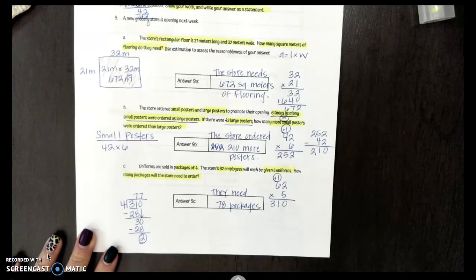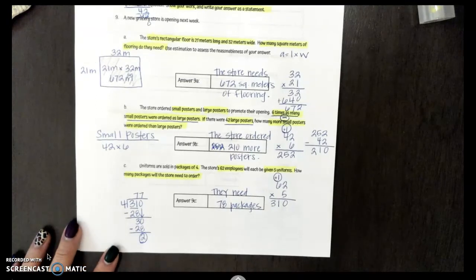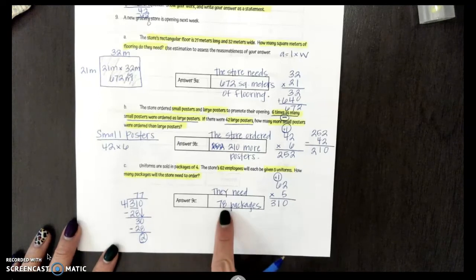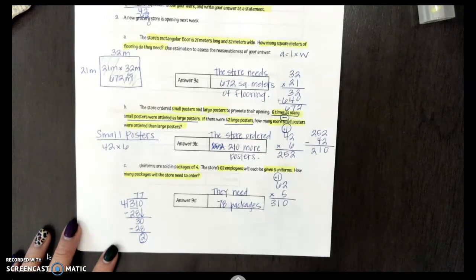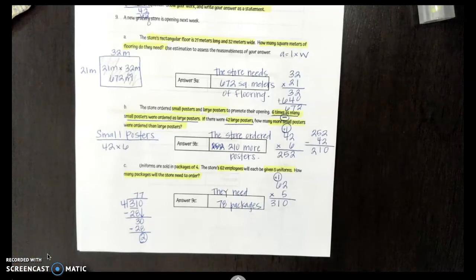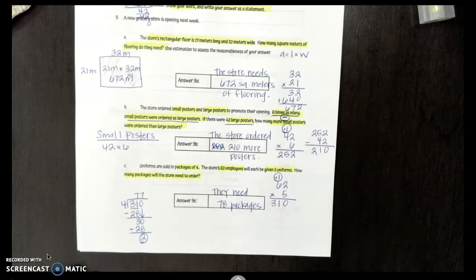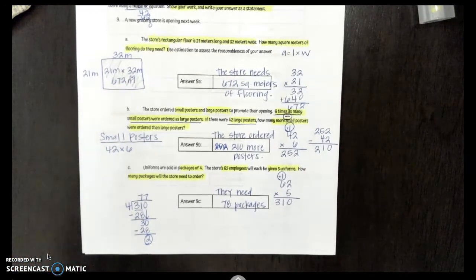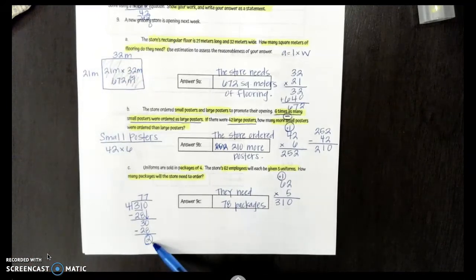However, all of your 62 employees, they still need those uniforms. They're still going to need those 2. So you can't just order those 78 packages. You're going to have to order 78 packages. Since you still have those 2 employees that need some left, you're still going to have to bump it up and order 78 packages. Okay? That's going to be a question you're going to want to pay very close attention to. Because if you do have that remainder, you're going to want to bump your answer up one more.